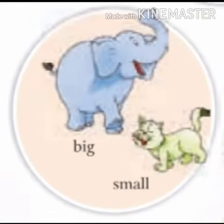Big and Small: The elephant is a big animal and the cat is a small animal.